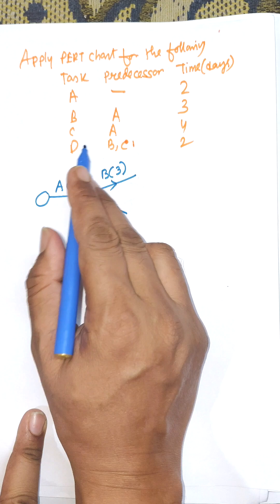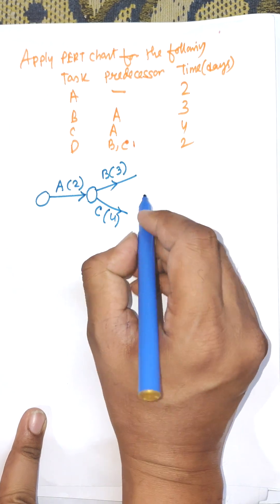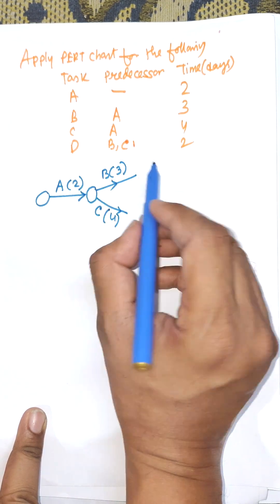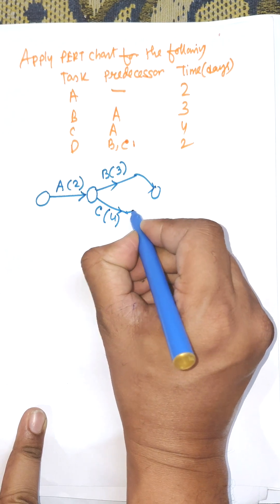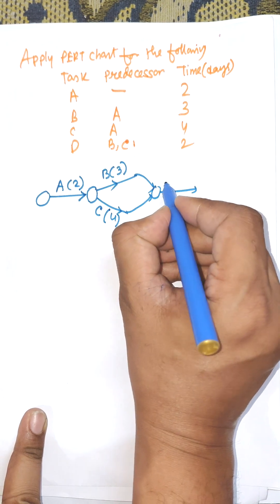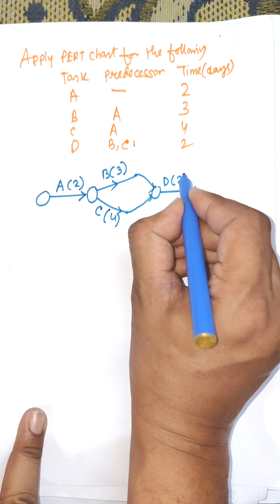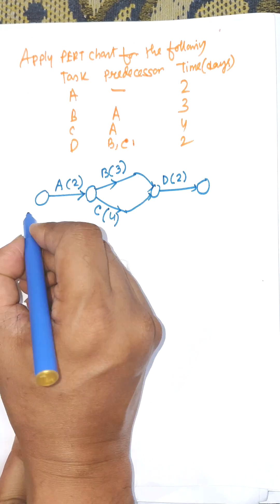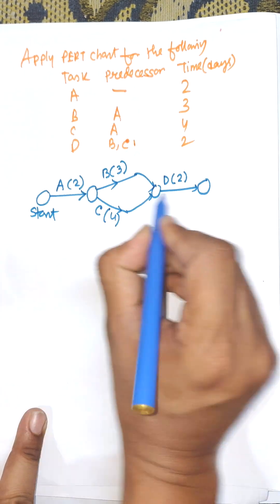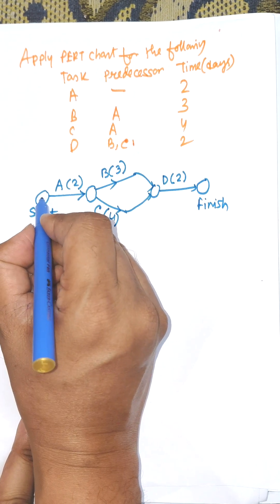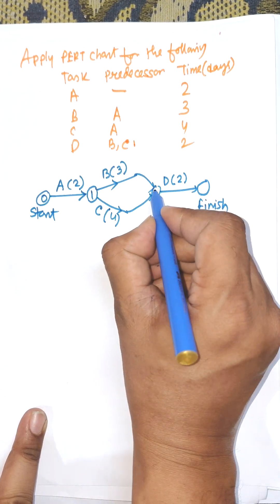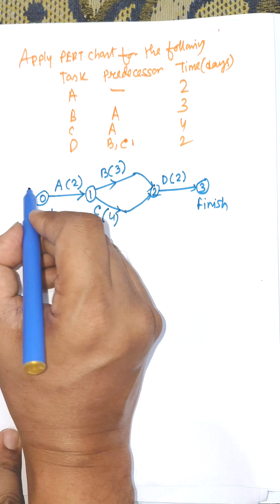Next, B and C combine together, we get D. So from the B and C we will get D. Duration for D is two days and this is the finish. So this is the start and this is the finish node. Numbering: this is suppose 0, 1, 2, and 3.